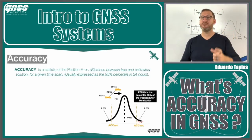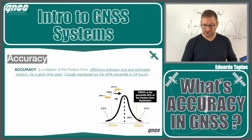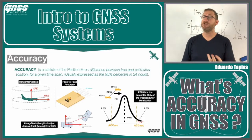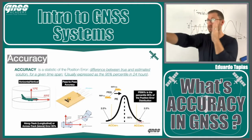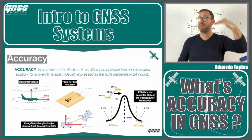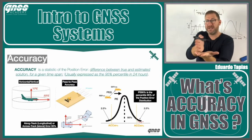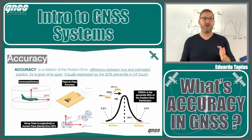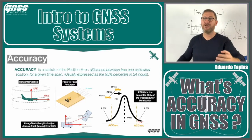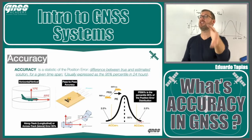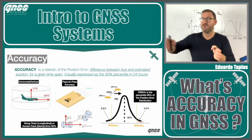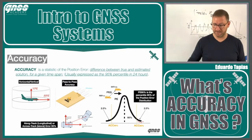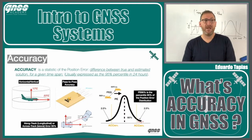This positioning error is typically projected into different domains depending on the application. In aviation, we care about the vertical and horizontal domains. In agriculture, they care about longitudinal and pass-to-pass accuracy between tractor passes. For autonomous cars, we focus on along-track and lateral-track. For railway, we look at longitudinal and lateral track. So the 3D position error is decomposed into different axes depending on the use case.